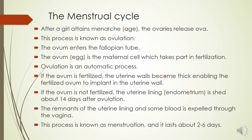The important part of this lesson is to learn about the menstrual cycle. After a girl attains menarche, the ovaries release ova — this process is known as ovulation. The ovum enters the fallopian tube. The ovum, or the egg, is the maternal cell which takes part in fertilization. You have to remember the ovum is as important as the sperm of the male reproductive system.